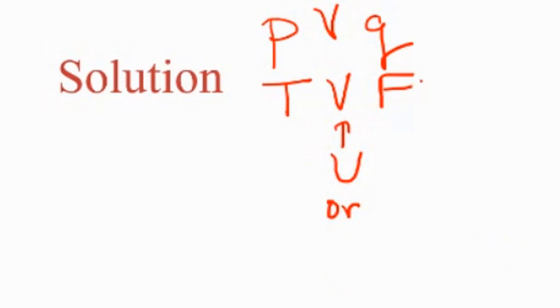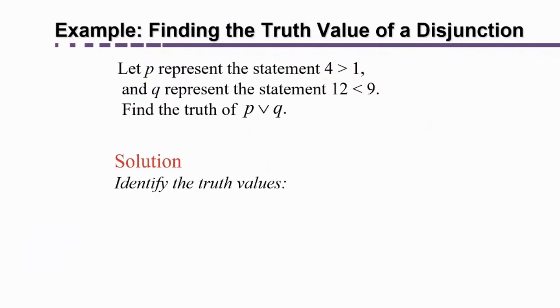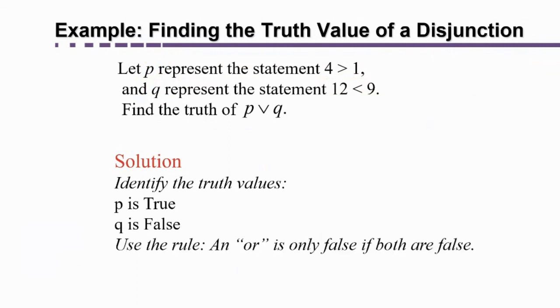So the rule for or is only false if both are false. Do we have both false here? No. So then it must be what? If it's not false, it has to be true. That's right. In step one, identify the truth values. P is true. Q is false. And then use the rule: or is only false if both are false. So it's true since P is true. I hope you found this video helpful.